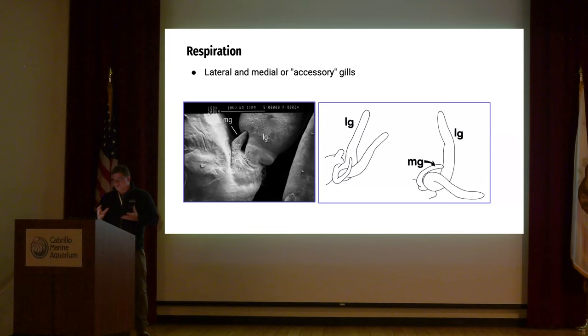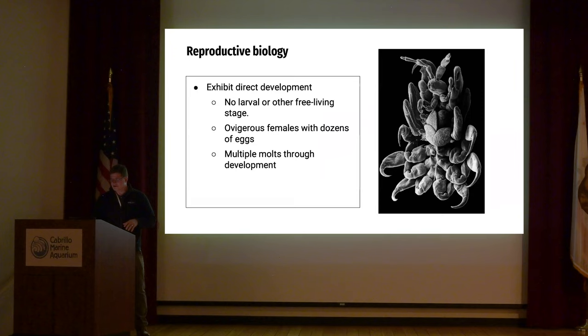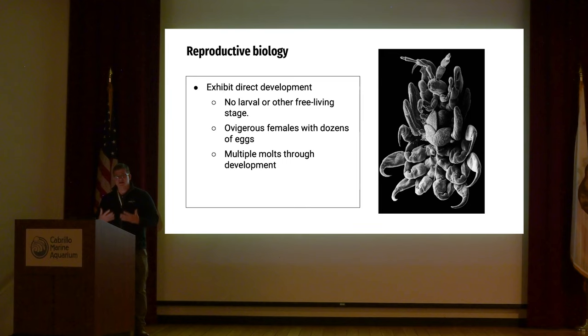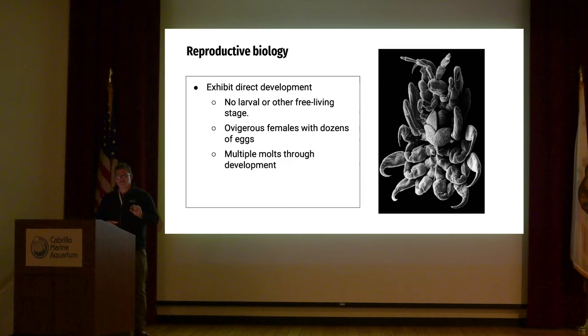There are also what have been referred to in the literature as accessory gills or medial gills — just examples of variation in gill morphology. When it comes to reproductive biology — this is a female. You can tell immediately in either skeleton shrimp or their close cousins the whale lice because of these broad plates — four broad plates in the middle called oostegites. That's her brood pouch, where she will house her eggs. When they first hatch, that's where the juveniles will be. Eventually they'll emerge from that pouch. They do so as miniature adults — they don't have that larval stage mentioned earlier for barnacles, which means they are tied directly to that host.